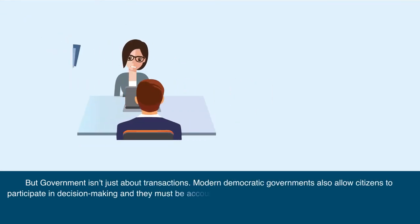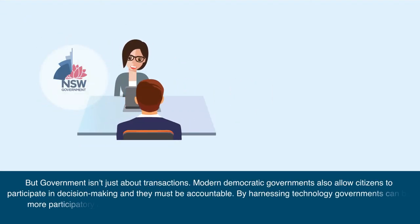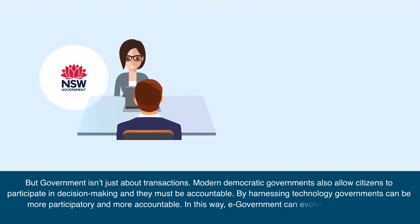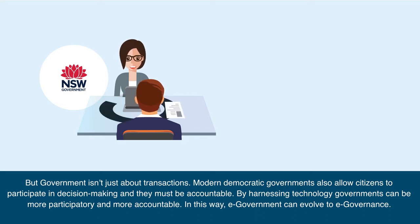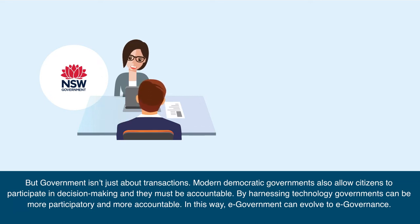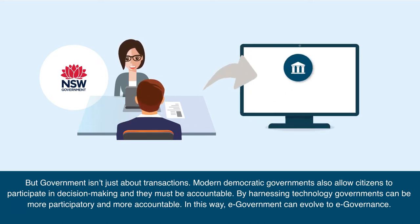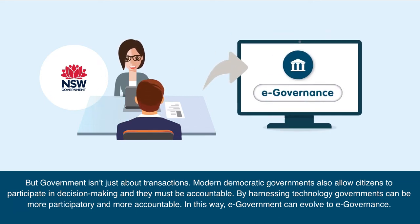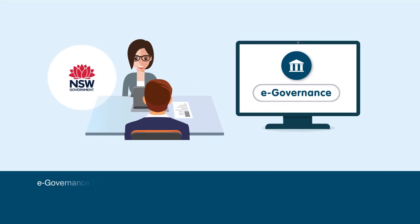But government isn't just about transactions. Modern democratic governments also allow citizens to participate in decision making, and they must be accountable. By harnessing technology, governments can be more participatory and more accountable. In this way, e-government can evolve to e-governance.